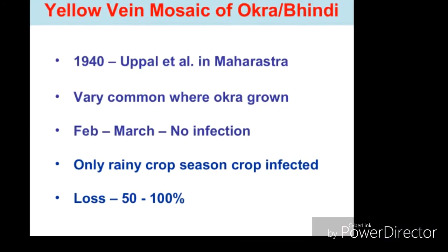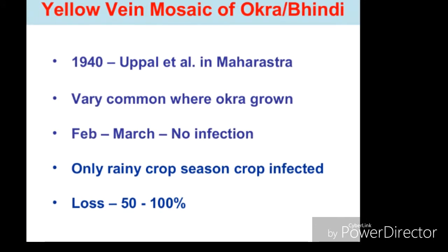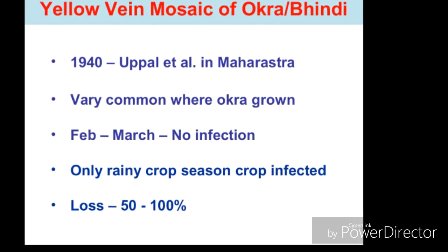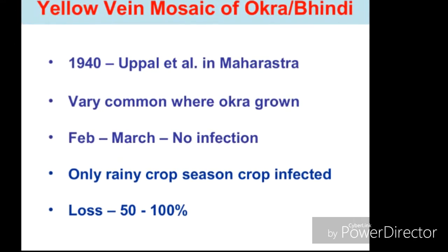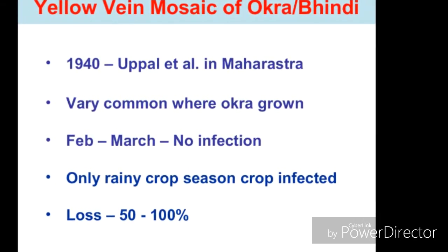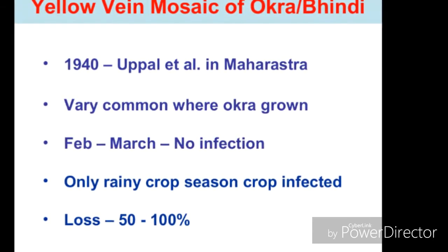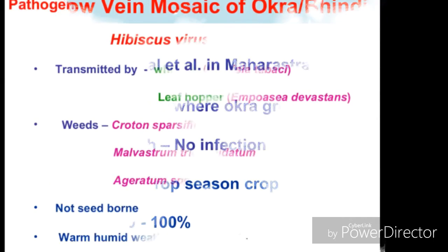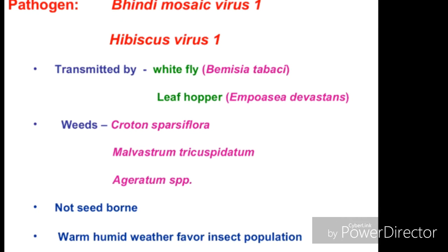Welcome back guys. Today we are going to talk about Yellow and Mosaic disease of Bhindi, first observed in 1940 in Maharashtra. It is very common where okra is grown, mainly infecting in the rainy season. Losses can be 50 to 100 percent. The pathogen is Bhindi Mosaic Virus, a viscous virus.